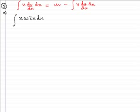And it's that that I'm going to use. So my u is going to be the x and my dv dx is going to be the cos 2x. So let's get straight into this then.